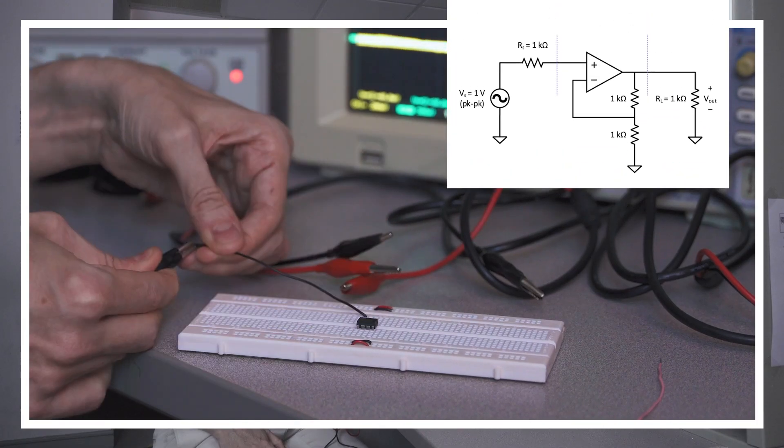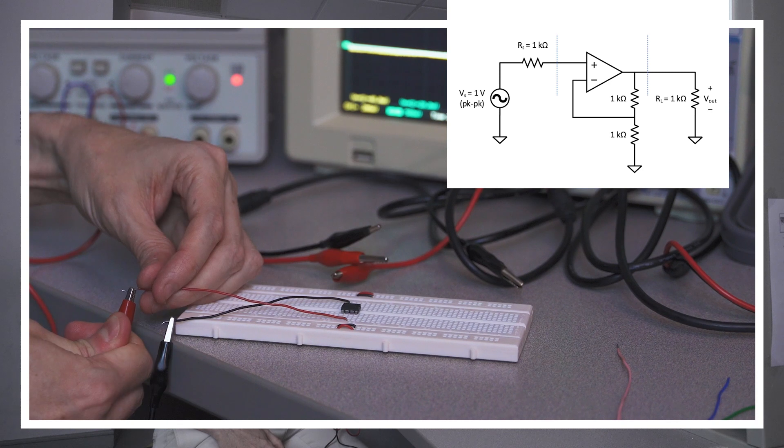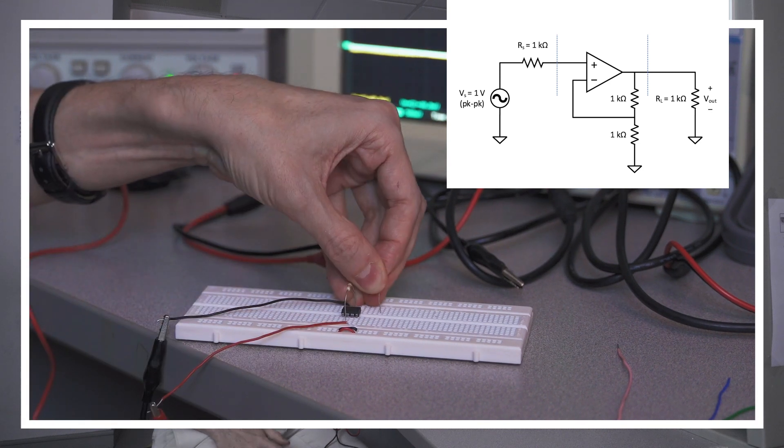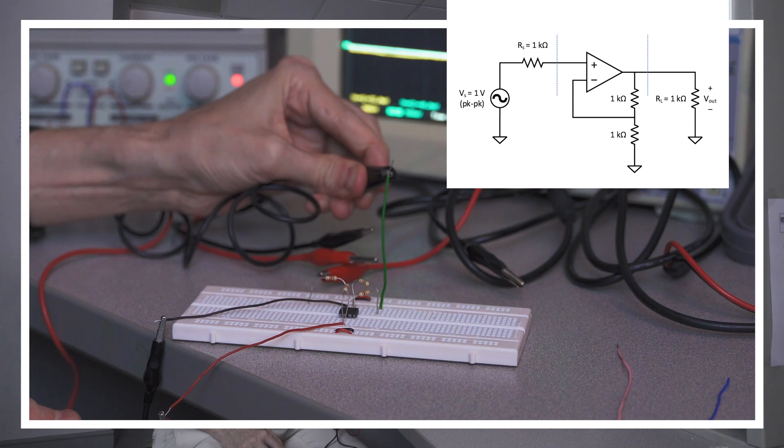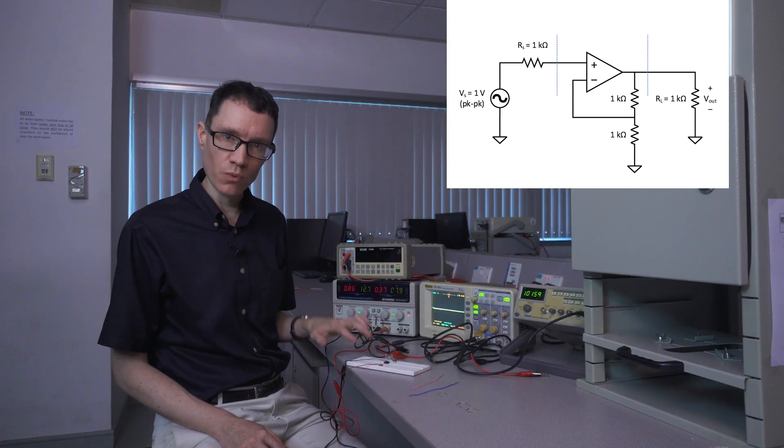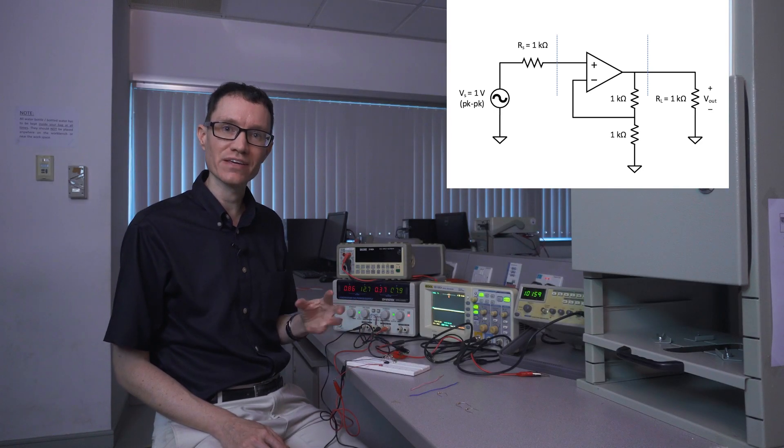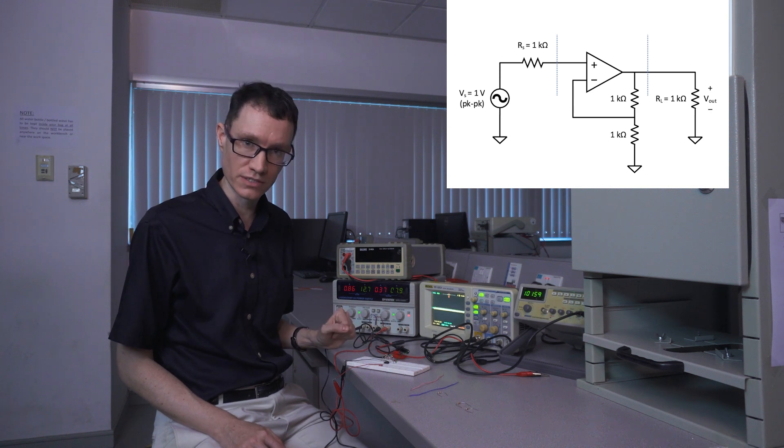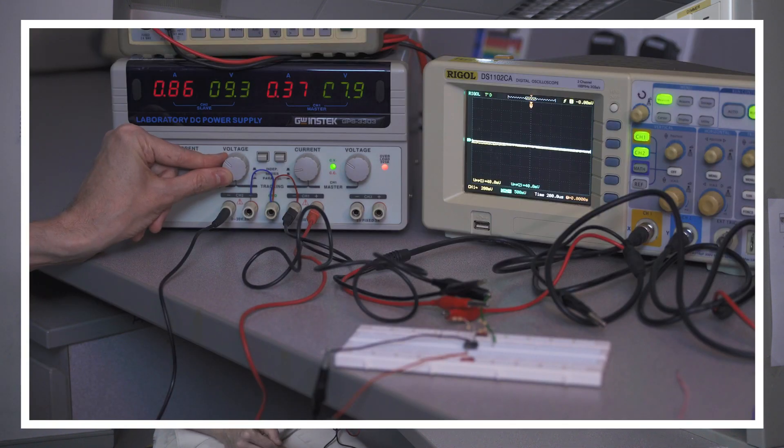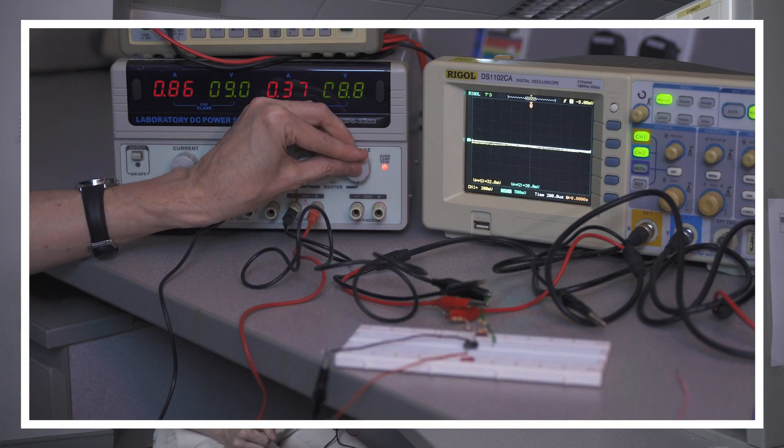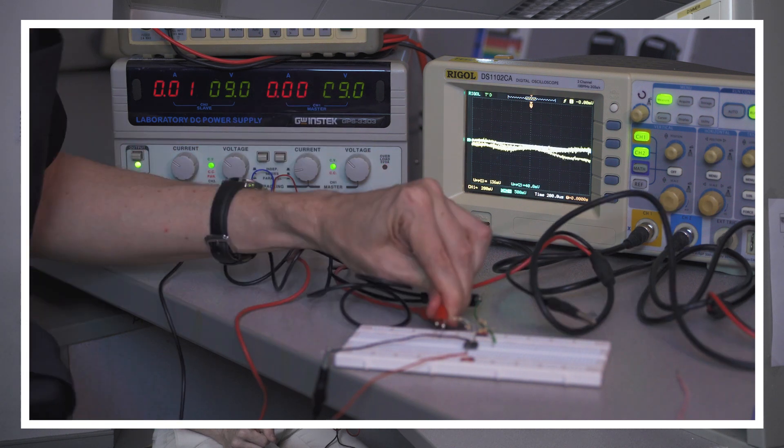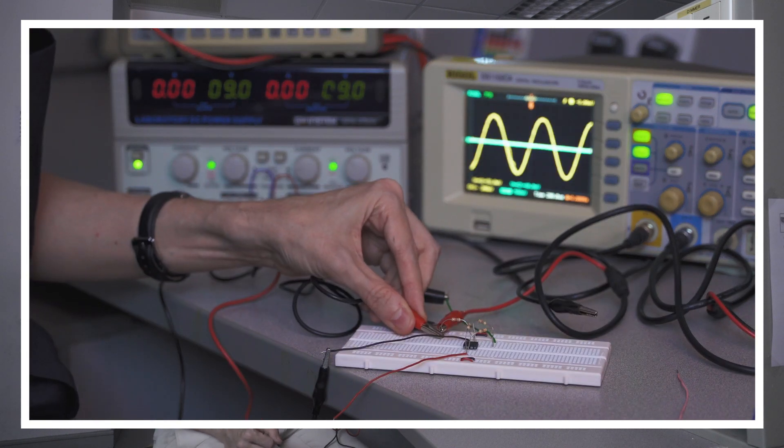We're starting out with both of the resistors around the amplifier at 1 kiloohm. This should give us a nominal gain of 2. I'm keeping the 1 kiloohm source resistance and the 1 kiloohm load resistance. Let's see what the gain actually is. I'm first going to have to turn on my power supply. Let's give the op amp plus and minus 9 volts.